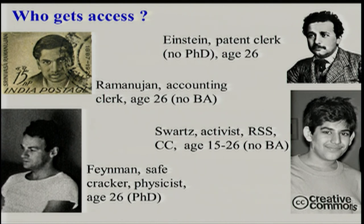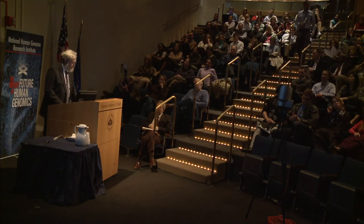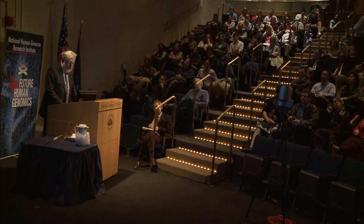Here are two clerks who did quite a bit without appropriate credentials by the time they were 26 years old — Einstein and Ramanujan. And here are Aaron Swartz and Richard Feynman, who almost certainly would not be given access to dbGaP, because one is a safe cracker and the other is an activist who likes putting private data into the public domain. Nevertheless, they made gigantic contributions by the time they were 26, and were generally not associated with institutions at the time of some of their breakthroughs.